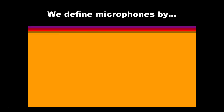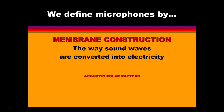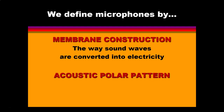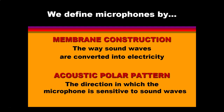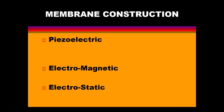We define microphones by two components: their membrane construction, which is the way the sound waves are converted into electricity, and their acoustic polar pattern, the direction in which the microphone is sensitive to sound waves. There are three types of membrane constructions: piezoelectric, electromagnetic, and electrostatic.